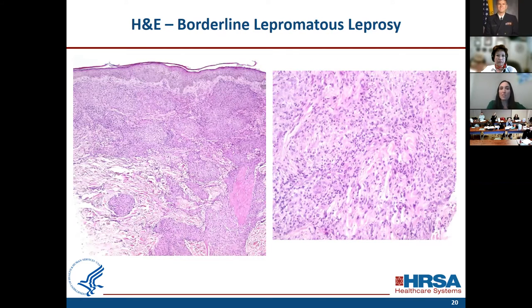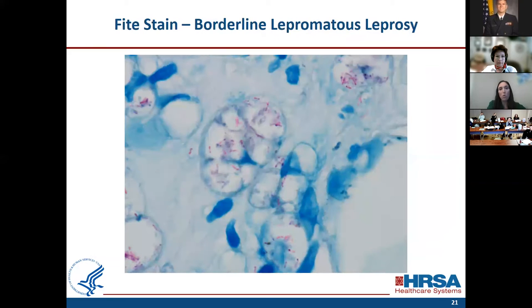Moving along the spectrum to borderline lepromatous leprosy, the granulomas become more and more disorganized — more of a granular or foamy histiocytic infiltrate, perivascular, peri-appendageal, perineural, but more diffuse and not as discrete. Usually more organisms within histiocytes, some of which can be beaded. Looking within the nerves is very, very important. Anytime you see a mycobacterial infection, always check the nerves — if you see organisms in the nerves, that means it is most likely leprosy.